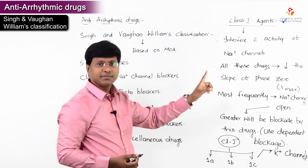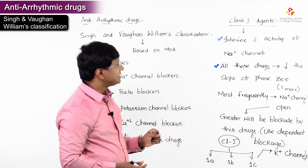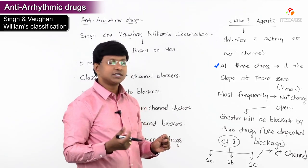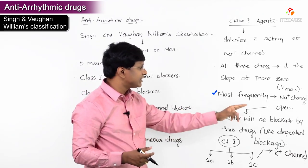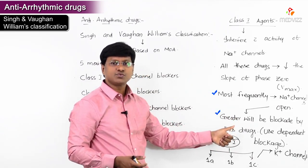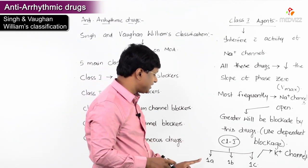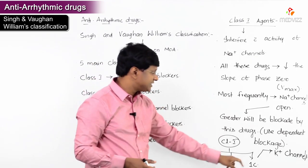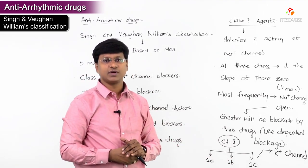Before going further, let me shortly revise about the Class 1 agents. They interfere with the activity of sodium channels and decrease the slope of phase 0. More sodium channels open means greater blockade — that is use-dependent blockade. Class 1 is subclassified into 1a, 1b, and 1c based on action on potassium channels. Now let me discuss Class 1a, 1b, and 1c agents in detail.